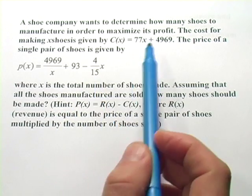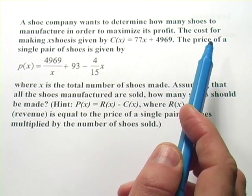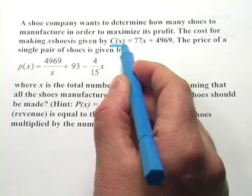This one says, a shoe company wants to determine how many shoes to manufacture in order to maximize its profit. The cost for making x shoes is given by this function, the cost function.